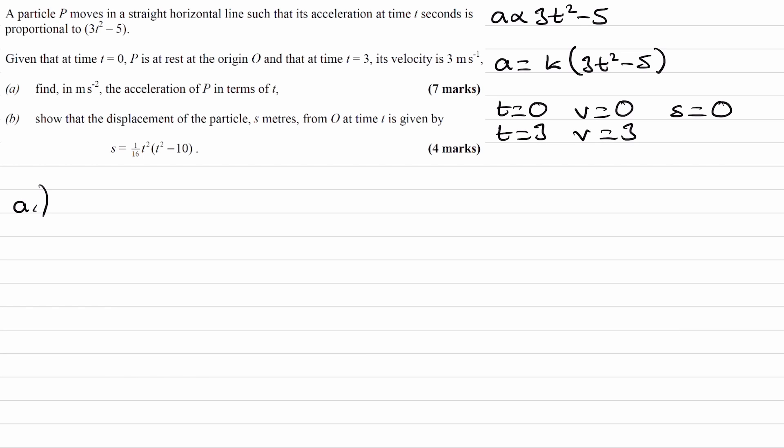And then for part A, we're trying to work out the acceleration of p in terms of t. So we know the acceleration already is k times 3t squared minus 5. So this is not going to be our final answer. We're going to want to work out what k is, but from what we have here, we don't have anything involving acceleration. So we can't just put in a time value and a corresponding acceleration into this equation to work out what k is. But we do have information on velocity, and velocity is the integration of acceleration with respect to time. So what we could do is we could integrate this equation here, find out what velocity is, put in our numbers, and then hopefully work out what k is from that.